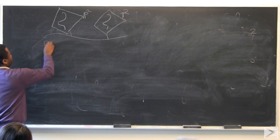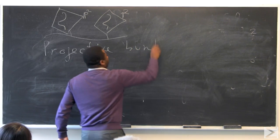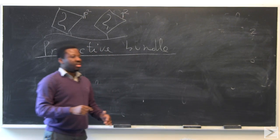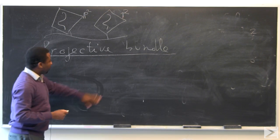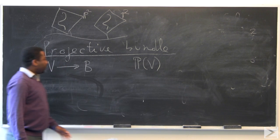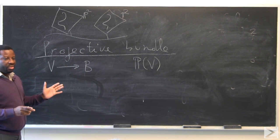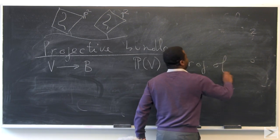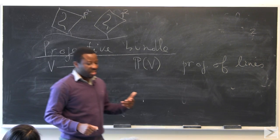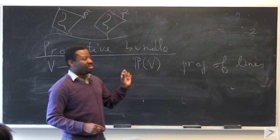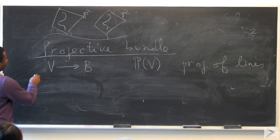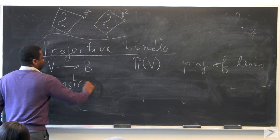The notion of a projective bundle was really well-defined by the Grothendieck school. When I write P of V, starting with a vector bundle V over a base, what it means is fiber by fiber you take the projectivization. In my notation, I take the projectivization of lines — I think of a projective space as a collection of lines and not a collection of hyperplanes. This usually doesn't really matter until you start doing intersection theory, because then you might end up with a sign moving all over the place.